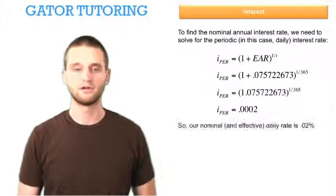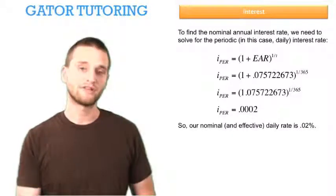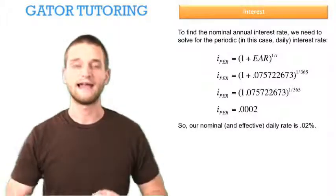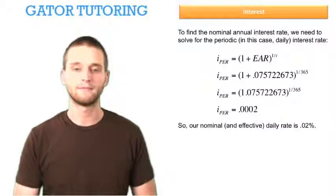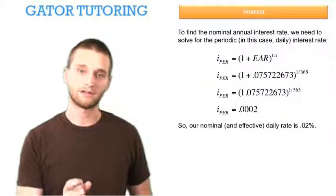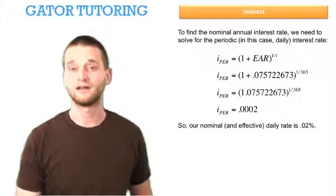That's a decimal, so our nominal rate is .02%. Notice that this is our nominal and our effective daily rate. You can talk about an effective rate at any period of time. It's just going to be the same as your nominal rate once you get down to the periods when the periods are the same amount of time that your interest is being compounded.